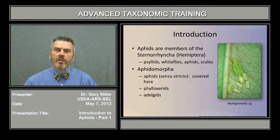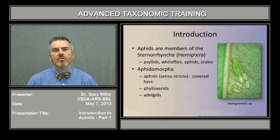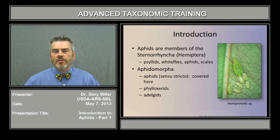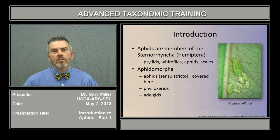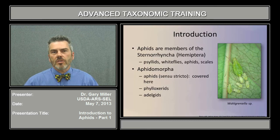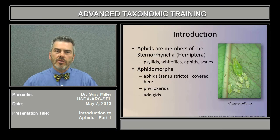Aphids are members of the sternorrhynca, that group of hemiptera where their mouth parts are located in the sternal area of the ventre. These include related groups such as psyllids, whiteflies, and scale insects. Aphids, as some workers call aphid amorpha, include aphids in the strict sense, and also phyloxarids and adelgids. Phyloxarids and adelgids have chitinous ovipositors, and as adults, have reduced antennal segmentation. These won't be covered in this particular module; however, we will talk about aphids in the strict sense.